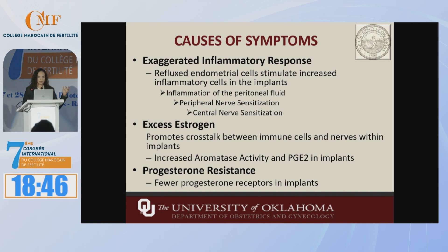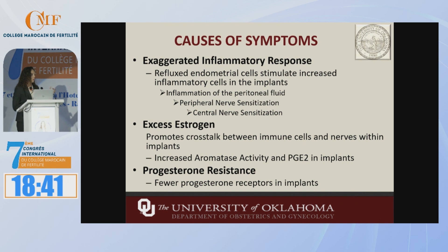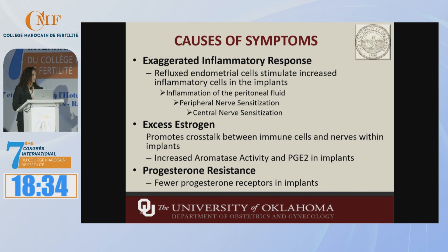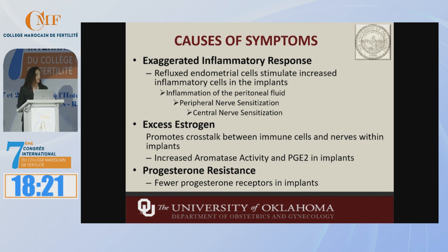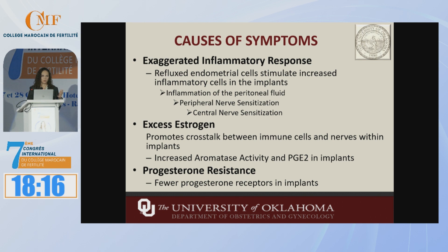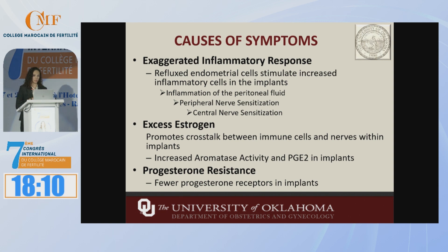Within the lesions, there is an excess of estrogen, which promotes crosstalk between all of the different lesions. There is also increased aromatase activity within the lesions, which is not the case for normal endometrium, and increased PGE2 in the implants, which also increases the estrogen. There's also relative progesterone resistance — within the implants, there is a decreased number of progesterone receptors.